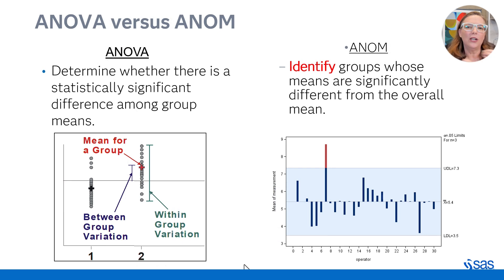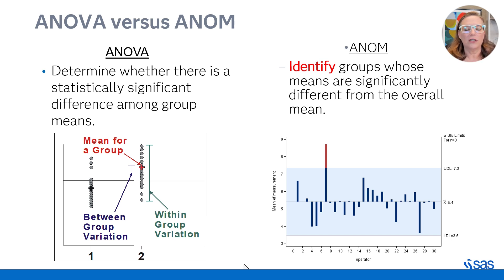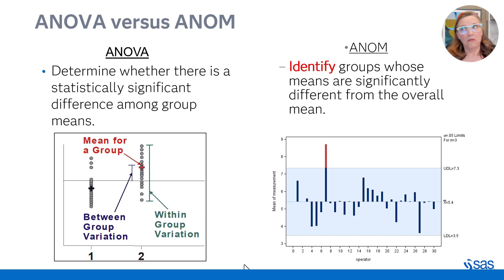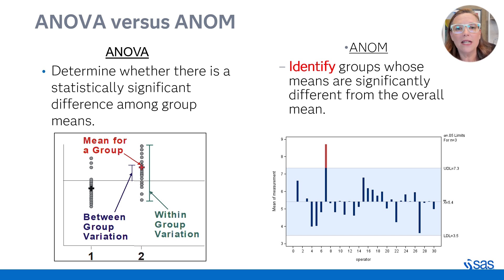The difference between ANOVA and ANOM — they're very similar and related, but not quite the same. It kind of looks like a Shewhart chart because the data looks like Shewhart data, but it's not a Shewhart chart. With ANOVA, you're trying to determine whether there's a statistically significant difference among group means. You compute the mean, compute the variability within the groups, compare that to the between-group variability, and it tells you there's a difference somewhere — but then you have to do additional comparisons to find where. Analysis of Means, on the other hand, does not give you that overall omnibus F-test. Instead, it identifies groups whose means are significantly different from the overall grand mean.